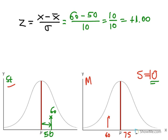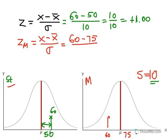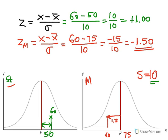What about 60 in the math distribution? The z-score z_m is going to be x minus x-bar for math over the standard deviation for math. That's 60 minus 75 — the mean of the math scores — over 10, because the standard deviation is the same. That's going to be minus 15 over 10, which equals minus 1.50. That means the score of 60 in the math distribution is 1.5 standard deviations below the mean. That's why there's a minus sign.